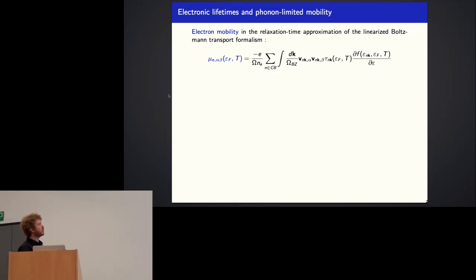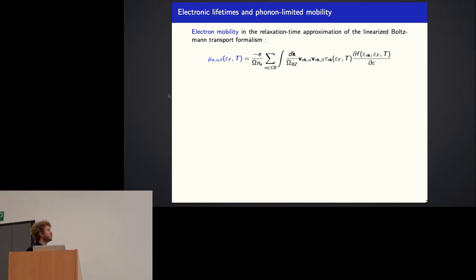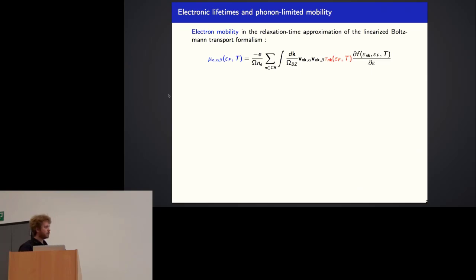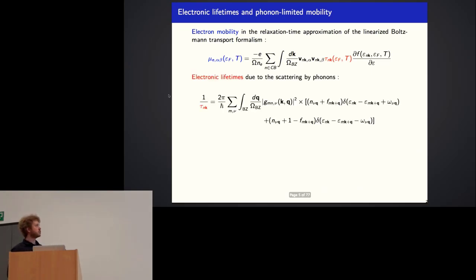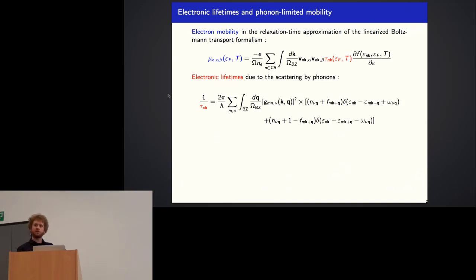In order to compute this mobility, we can use the Boltzmann transport formalism in the relaxation time approximation. We have this formula for the mobility of electrons: a sum over states in the conduction bands, integrating over the Brillouin zone the electron velocities, the electron lifetimes, and the derivative of the Fermi-Dirac occupation function. These lifetimes account for the different scattering mechanisms. For phonon-limited mobility, we focus on scattering by phonons. An electron in state NK can emit or absorb a phonon of wave vector Q and go into state NK+Q, summing over all possible phonon wave vectors.